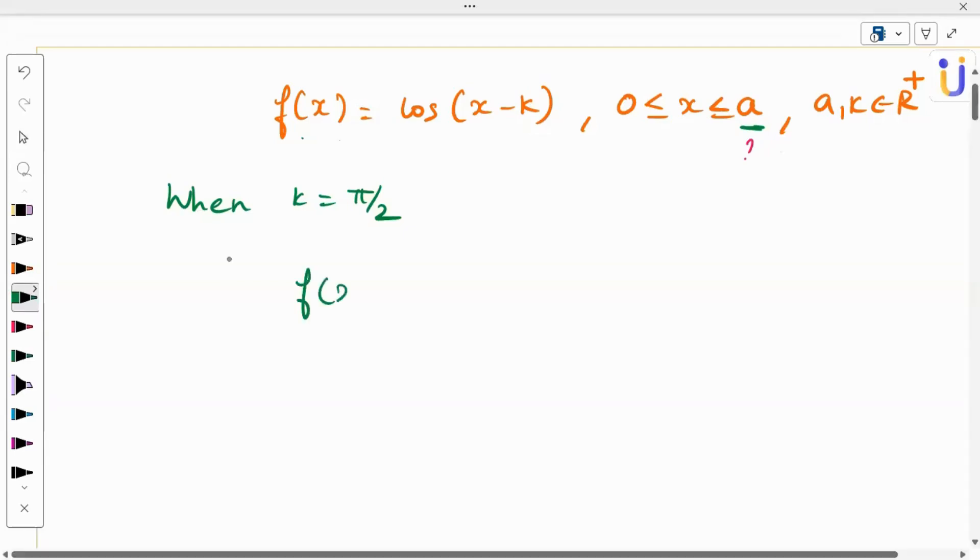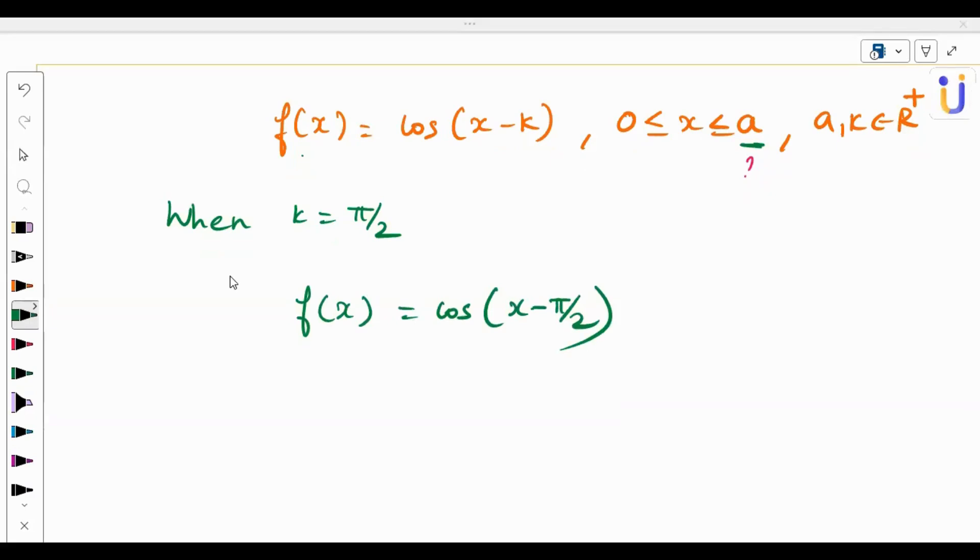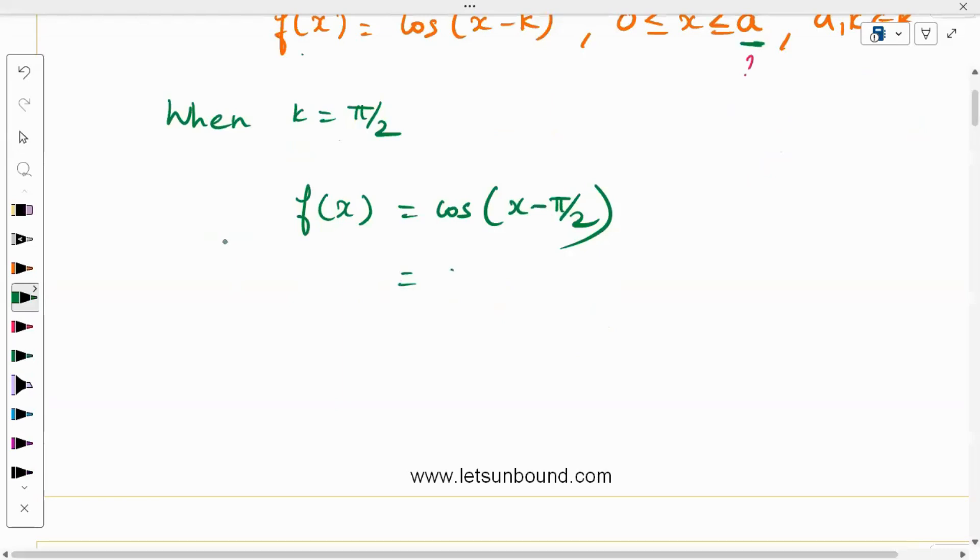When k is π/2, f(x) will become cos(x - π/2), correct? And cos(x - π/2) is going to be sin(x). So you can convert, like this is the variable to cos, you can take a minus out and it's π/2 - x. And it is cos of negative theta, it's cos(π/2 - x). And this is basic stuff, cos(π/2 - x) is sin(x). So this function cos(x - k), at the case of k is π/2, it acts as sin(x).